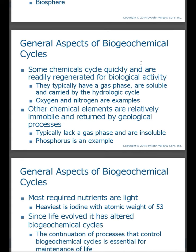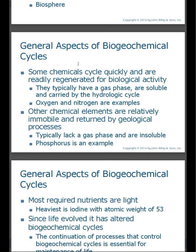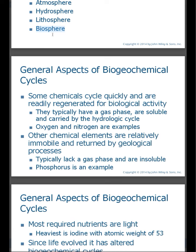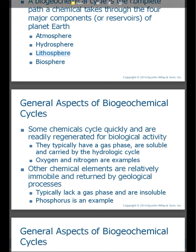Now some general aspects of biogeochemical cycles: some actually move through systems. Some chemicals actually move through these systems rather quickly — those that move through quickly typically have a gas phase and are soluble and carried by the hydrologic cycle. Oxygen and nitrogen cycle through the hydrologic cycle rather quickly. And then there are other chemical elements that are basically immobile — they are returned over millions of years. There are chemicals in the lithosphere that cycle in and out over millions of years. Their residence time is on the order of millions of years.